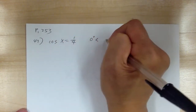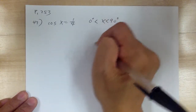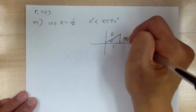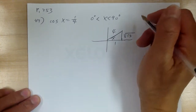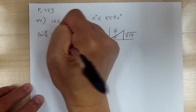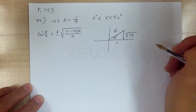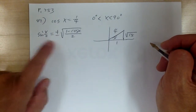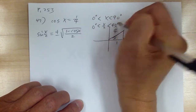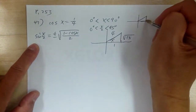Let's go to number 47. You have cosine x equal to 1 over 4 and the angle is between 0 and 90 degrees, so it's in quadrant 1. Using the Pythagorean theorem, you get the opposite side as square root of 15. You're looking for sine of x over 2 and cosine of x over 2. To find plus or minus, divide the range by 2: you get 0 less than x over 2 less than 45 degrees, which is still quadrant 1, so sine is positive.